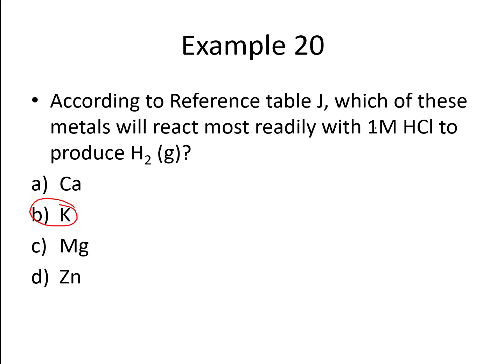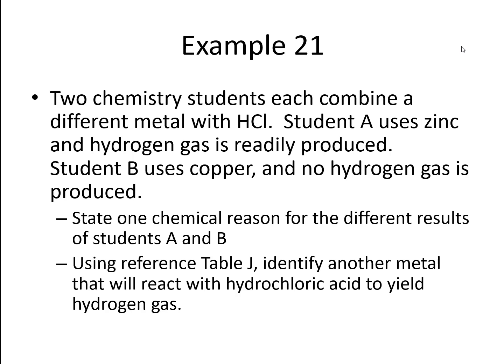Let's try another problem. Example 21. Two chemistry students each combine a different metal with hydrochloric acid. Student A uses zinc and hydrogen gas is readily produced. Student B uses copper and no hydrogen gas is produced. So that's our background info. There are two questions that go with this. I'm going to have you try to answer both. First, state one chemical reason for the different results of students A and B. And second, using reference Table J, identify another metal that will react with hydrochloric acid to yield hydrogen gas. Take a moment, use your reference table, try to answer this now.